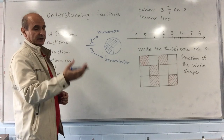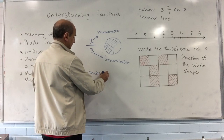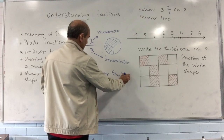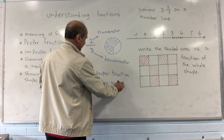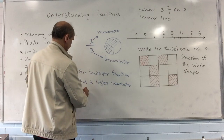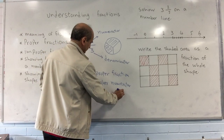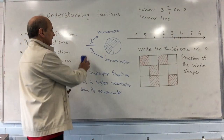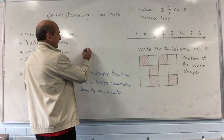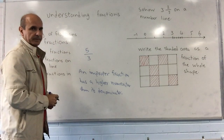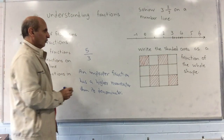An improper fraction is the opposite — it has a higher numerator than its denominator, meaning the numerator is larger. An example of an improper fraction is five over three, or five-thirds.